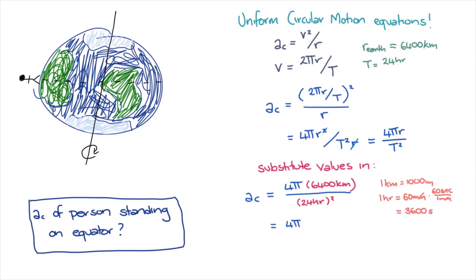So in our expression, replacing kilometre with 1000 metres and hour with 3600 seconds, we find that the total centripetal acceleration of a person standing on the surface of the Earth at the equator is 0.034 metres per second squared. This acceleration comes from the gravitational force of the Earth.